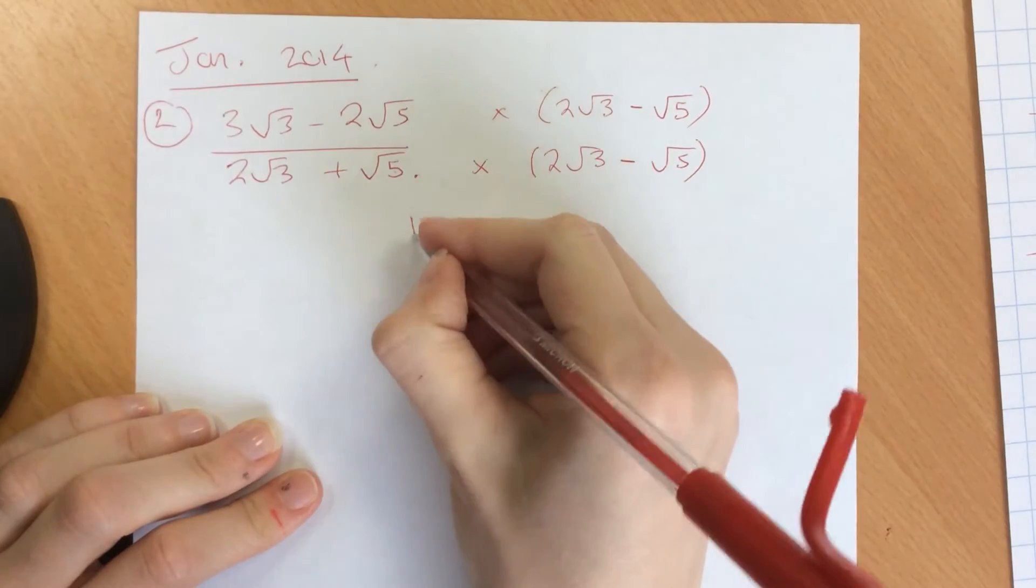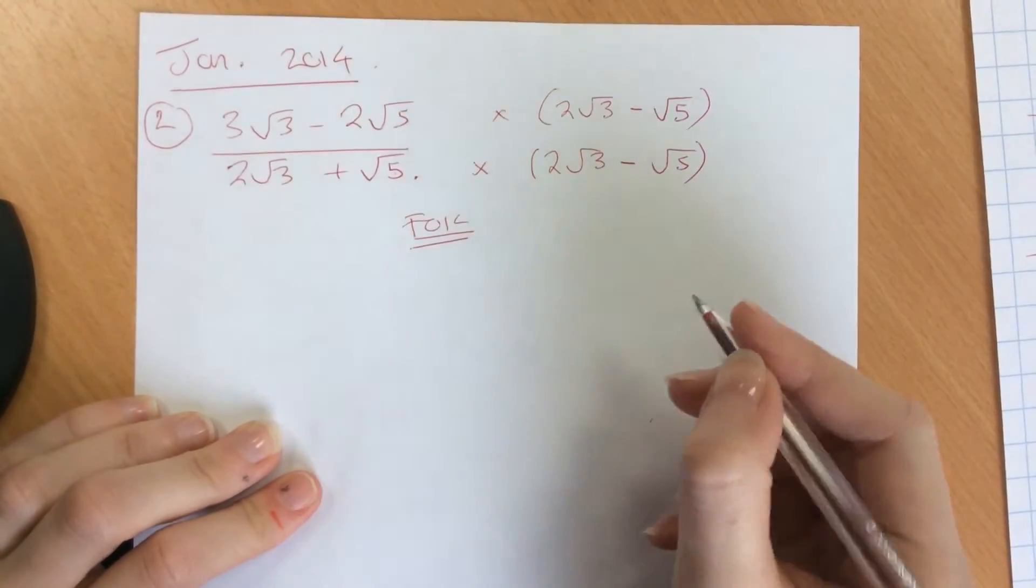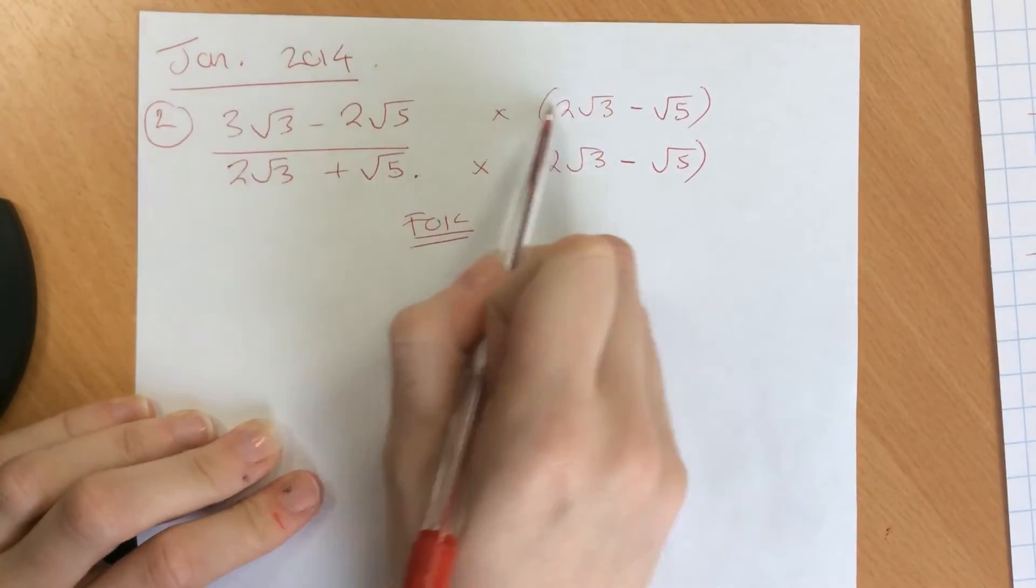Then what we're going to use, we're going to use FOIL, first, outside, inside, last, to expand these brackets.